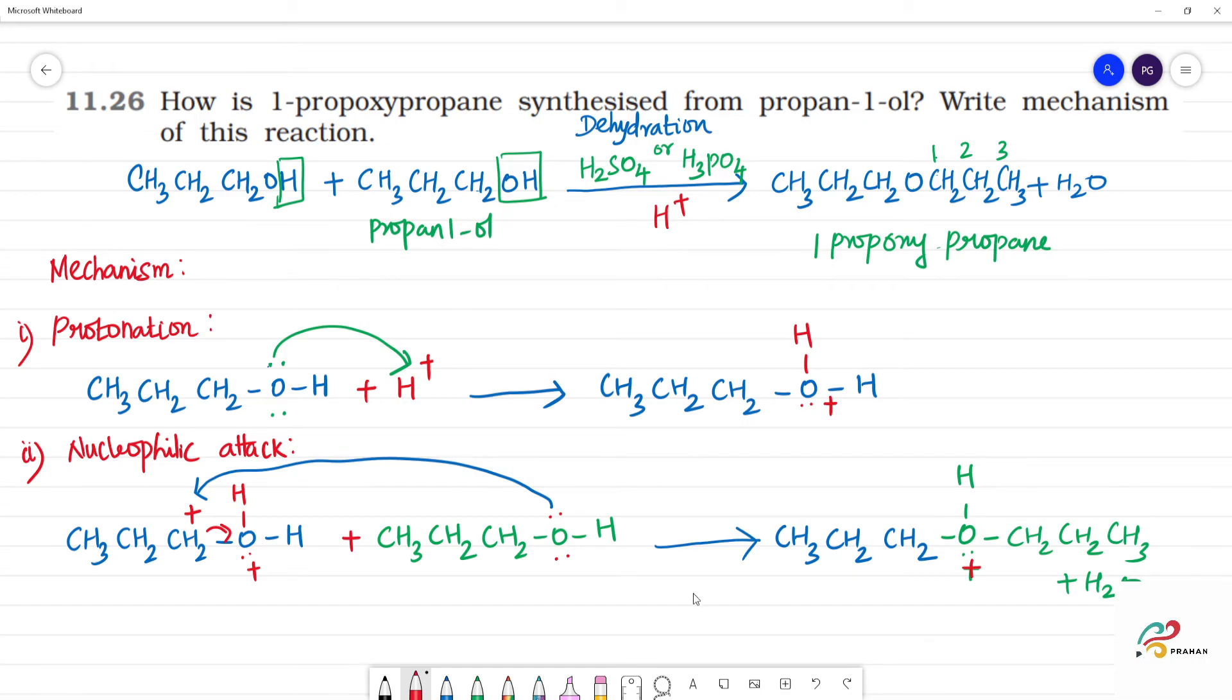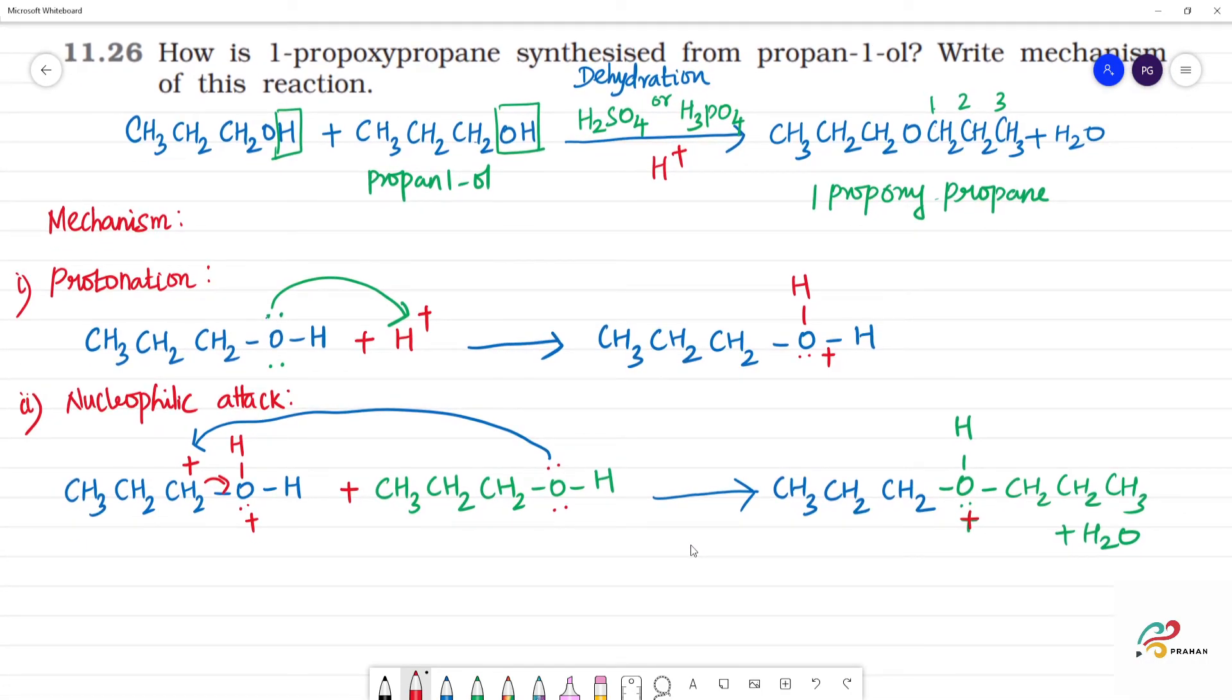Now, the last step: Deprotonation. First, we add then remove. This acid is catalyst. Deprotonation. This molecule is CH3-CH2-CH2-O-H, then CH2-CH2-CH3. This is positive charge.